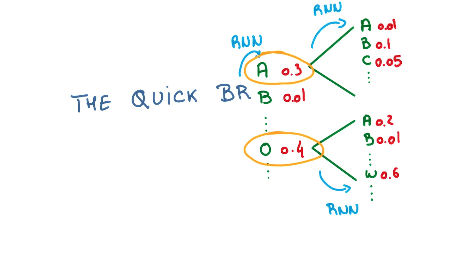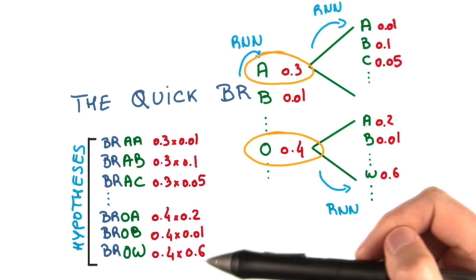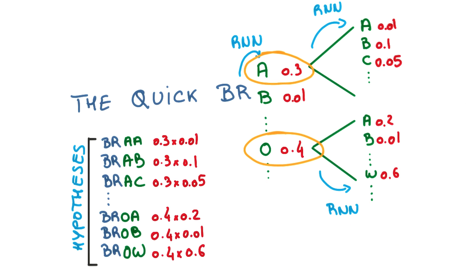Instead of just sampling once at each step, you could imagine sampling multiple times. Here you pick O, but also A, for example. Then you have multiple sequences, often called hypotheses, that you could continue predicting from at every step.